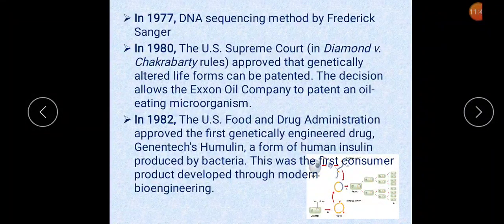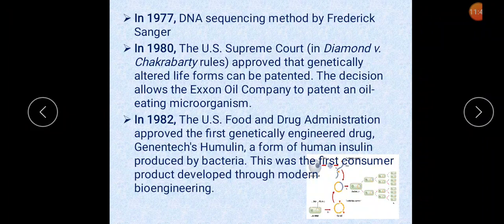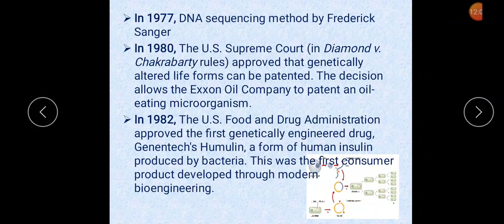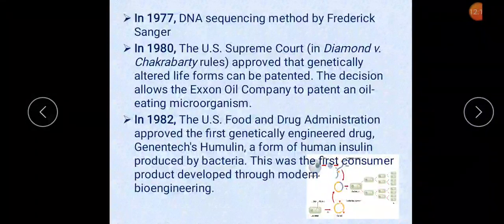In 1980, the US Supreme Court approved that genetically altered life forms can be patented, allowing the Exxon oil company to patent an oil-eating microorganism. In 1982, the US Food and Drug Administration approved the first genetically engineered drug — Genetech's humulin, a form of human insulin produced by bacteria. This was the first consumer product developed through modern bioengineering.